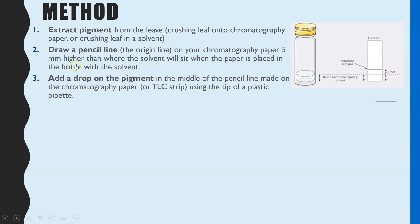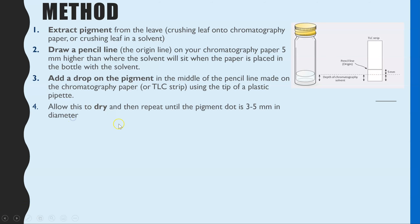Then we can start adding our extracted pigment to the very middle of your origin line. That might be directly crushing the leaf with a glass rod onto the origin line, or if you made a pigment suspension, you might use the tip of a plastic pipette to place small volumes gently on the paper to get a very small droplet. Whichever method you use, you have to let that drop completely dry and then repeat this over and over, as you need enough pigment on the paper — approximately three to five millimeters in diameter.